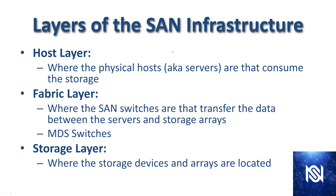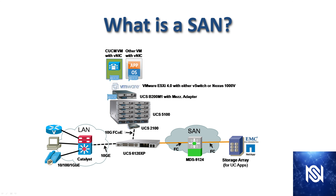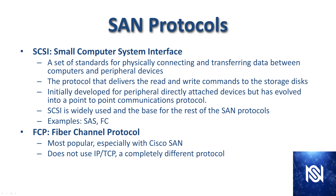The layers of the SAN infrastructure refer to the layers of the actual network itself. The host layer is where the physical hosts, or servers, are — those that consume the storage. The fabric layer is where the SAN switches, such as the MDS switches, transfer data between servers and the storage array. The storage layer is where the storage devices and arrays are located. Looking at the diagram: the UCS B series chassis is the host layer, the cloud and MDS 9124 represent the fabric layer, and the storage array is the storage layer.